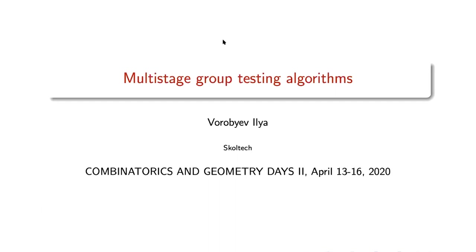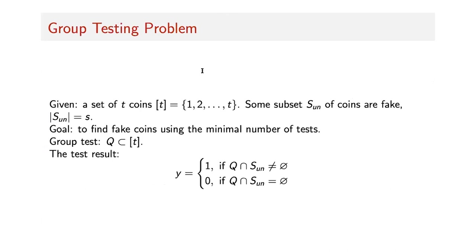Consider the following problem. We are given a set of coins numbered from 1 to T, some of which are fake. We denote the set of fake coins by S, which is unknown. We know the cardinality of this set equals S, some constant. Our goal is to find all fake coins using the minimum number of special tests. One test is a subset of coins, and the test result is positive if there is at least one fake coin in the test; otherwise the answer is negative.